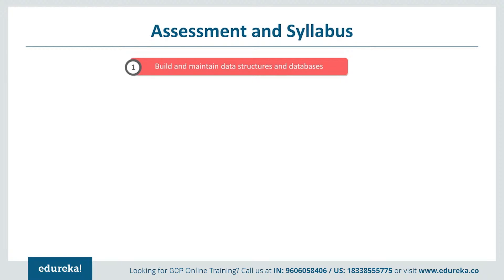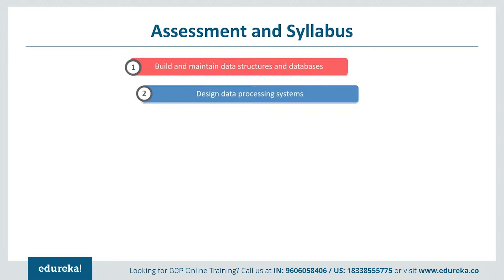The syllabus for the Professional Data Engineer starts with Section 1: building and maintaining data structures and databases. This includes future advances in data technology, changes to business requirements, awareness of the current state and how to migrate the design to a future state, data modeling trade-offs, and schema design.